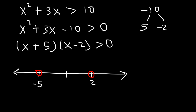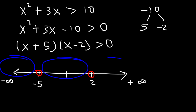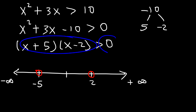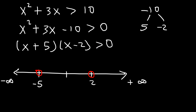All the way to the left we have negative infinity, and all the way to the right we have positive infinity. There are three regions of interest: the first, the second, and the third. The product of the two factors has to be positive — greater than 0 — so we need to see which of these three regions is positive and which is negative.